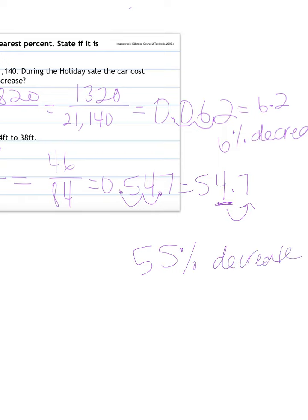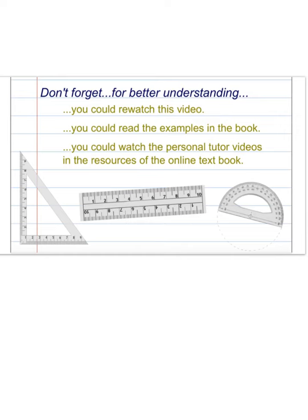Alright, so that is how to find percent of change. The main thing is to find the amount that it's changing and divide it by the original amount and then turn it into a percent. If you're still stuck, you can go and re-watch any part that you're still stuck on.